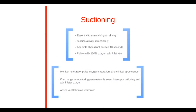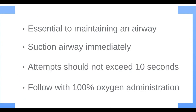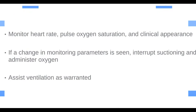Suctioning is essential to maintaining an airway. Suction the airway immediately if there are secretions, blood, or vomit. Do not suction for more than 10 seconds. To avoid hypoxemia, follow suctioning attempts with a short period of 100% oxygen administration. Monitor the patient's heart rate, pulse oxygen saturation, and clinical appearance during suctioning. If a change in monitoring parameters is seen, interrupt suctioning and administer oxygen until the heart rate returns to normal and clinical condition improves. And assist in ventilation as warranted.